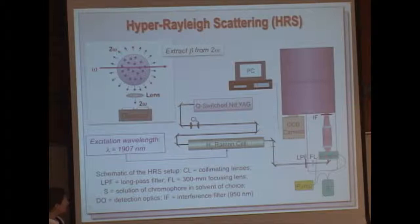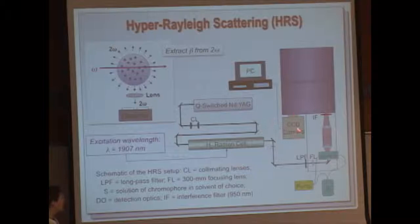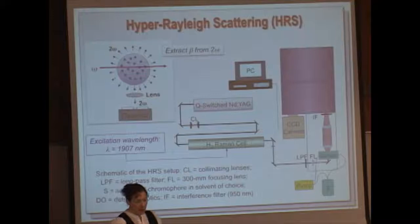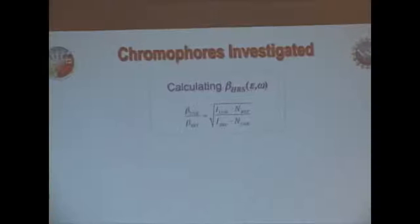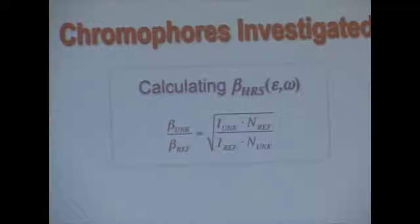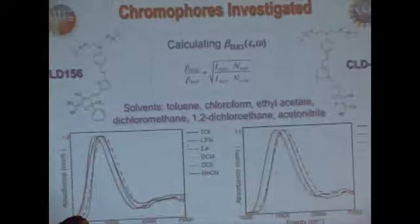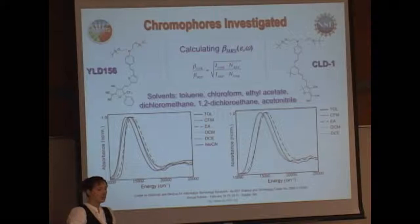Focused down onto our sample, shown here. Through that, we generate the second harmonic scatter, collect it through some detection optics into a monochromator and also a charge-coupled camera. This allows us to obtain the overall spectrum of our hyper-Rayleigh scattering. From that spectrum, we obtain the intensities. Thankfully, there's a direct relationship between your reference intensity to that of your unknown hyperpolarizability, so we can extract the hyperpolarizability for our specific samples. In this case, we looked at YLD156 and CLD1, as shown here, in several different solvents with a wide range of dielectric constants.